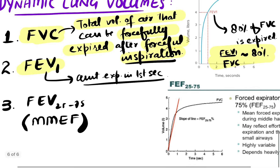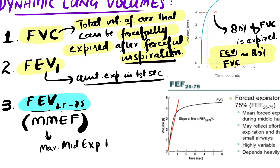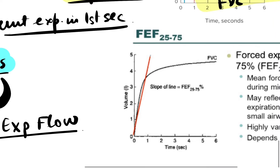In certain conditions we cannot use FEV1, so we use a modified form called FEV25 to 75 percent. This is also called MMEF — maximum mid expiratory flow rate. Let's understand this with the help of the diagram.